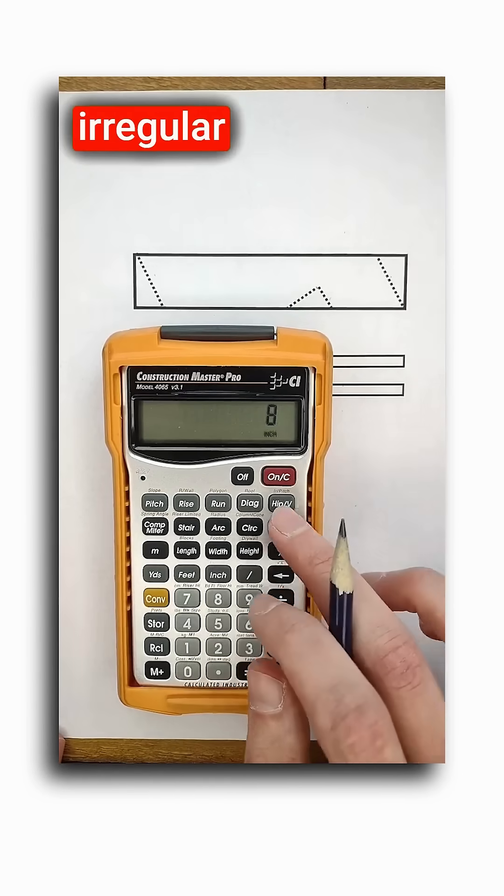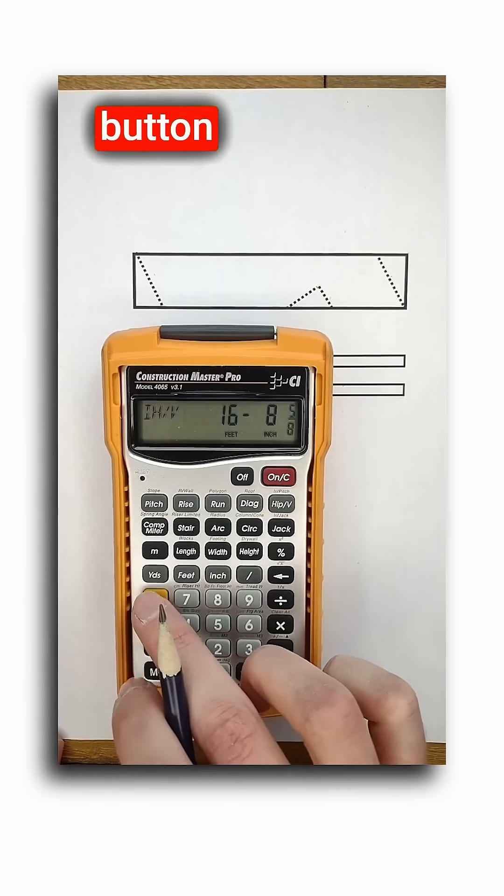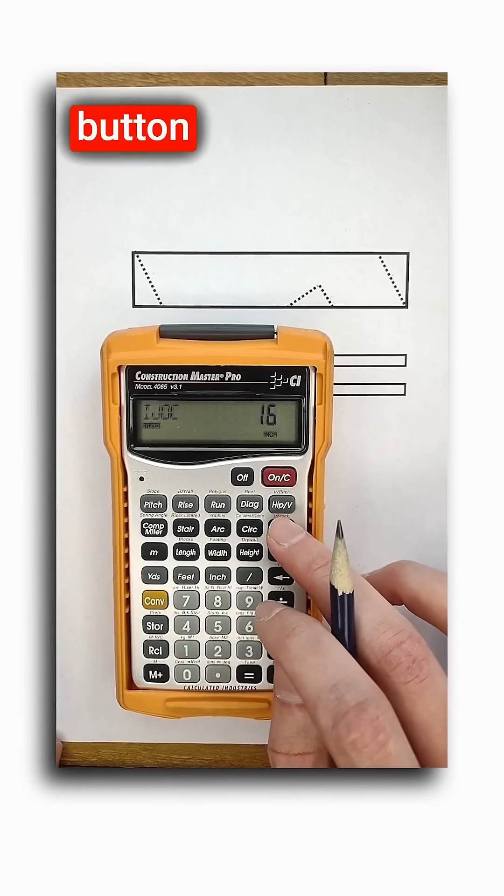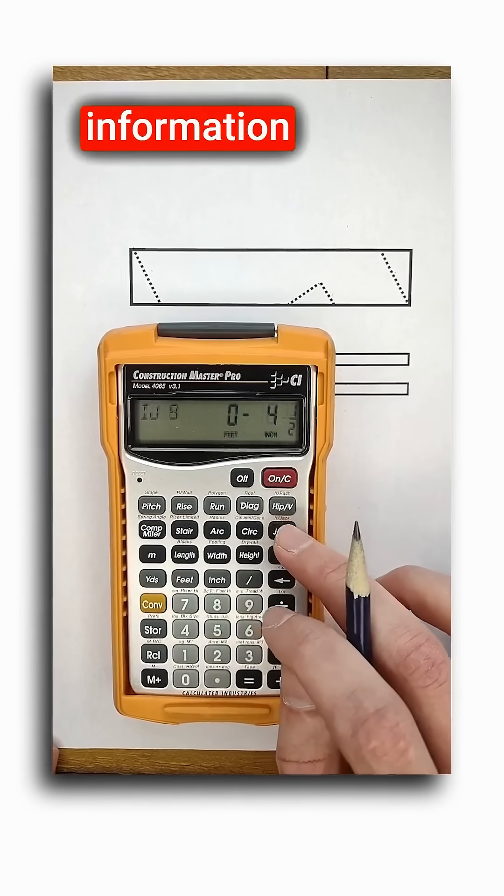Now if I have an irregular pitch, I can enter that and then push the hip valley button. And finally pushing convert before the jack button will allow me to directly access the irregular jack information I need.